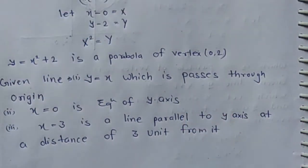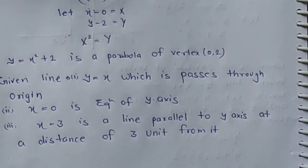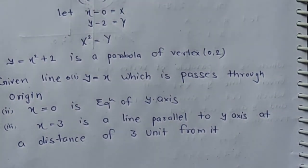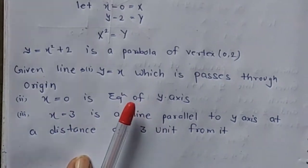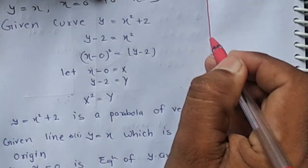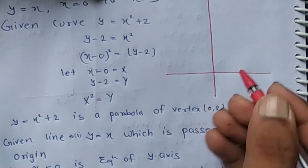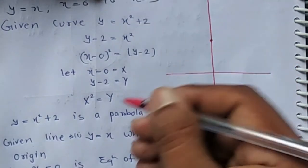Now plot this diagram. We have y equals x squared plus 2, vertex is 0 comma 2, and it is an upward parabola.